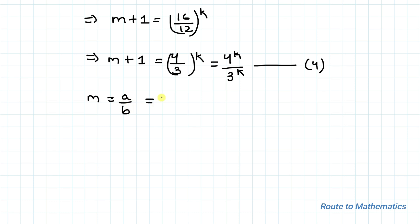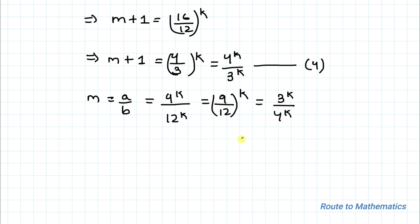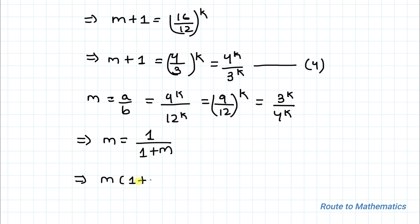From equation 1, a equals 9 to the power k, and b equals 12 to the power k, so m equals (9/12) to the power k equals 3 to the power k divided by 4 to the power k. From equation 4, m + 1 equals 4 to the power k divided by 3 to the power k. So we can write m equals 1 divided by (1 + m). By cross multiplication, m times (1 + m) equals 1, giving m + m² = 1.